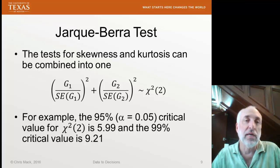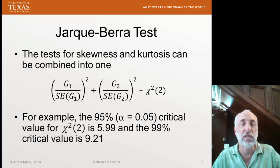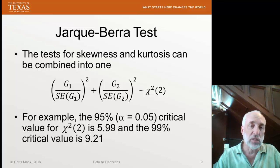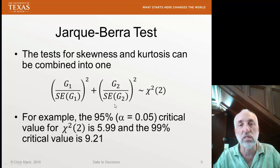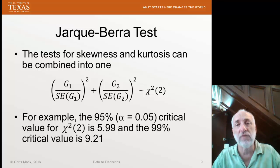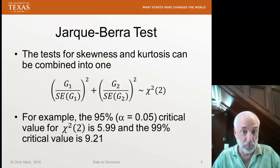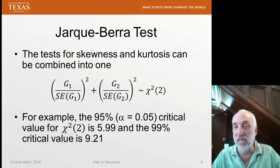One last topic. Sometimes people will combine the skewness and kurtosis tests into one. The skewness statistic is G1 over the standard error of G1. Our kurtosis statistic is G2 over the standard error of G2. Both of these are normally distributed under the null hypothesis. Therefore, if I square them and sum them together, I would expect to get a distribution that is chi-squared with two degrees of freedom. This is pretty much just the definition of chi-square.